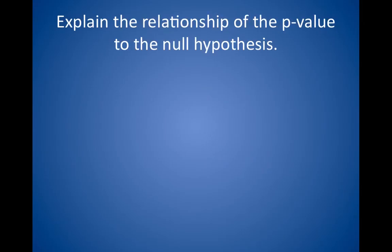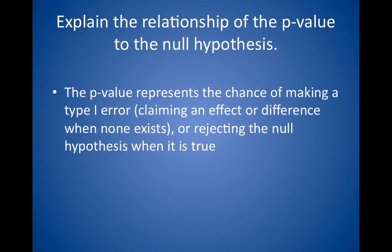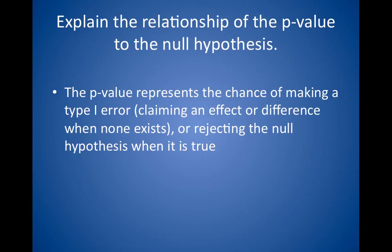Explain the relationship of the p-value to the null hypothesis. The p-value is related to the null hypothesis — the hypothesis of no difference. For example, in a study of hypertension, the null hypothesis says that the drug under investigation does not work; therefore, any difference in blood pressure is because of random error or chance. When the drug works beautifully and lowers blood pressure by 60 points, the null hypothesis must be rejected because clearly the drug works. When p is less than 0.05, you can confidently reject the null hypothesis because the p-value tells you there is less than a 5% chance that the null hypothesis is correct. If the null hypothesis is wrong, the difference in blood pressure is not caused by chance — therefore, it must be because of the drug. In other words, the p-value represents the chance of making a type 1 error: claiming an effect or difference when none exists, or rejecting the null hypothesis when it is true.